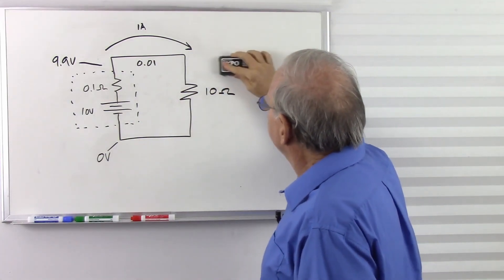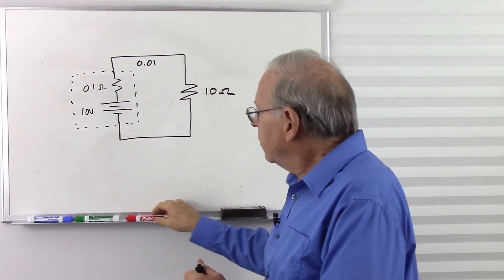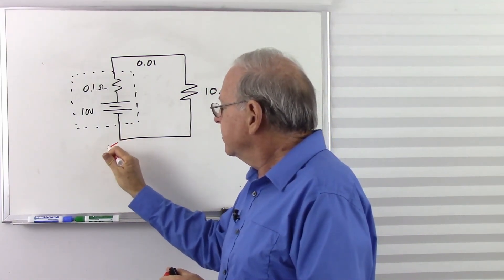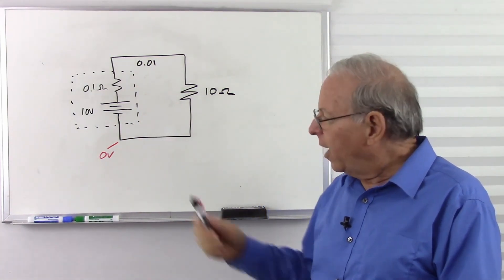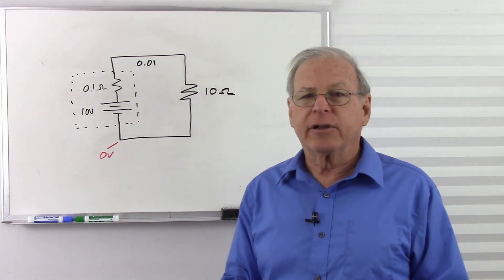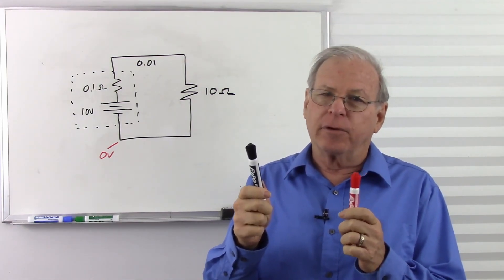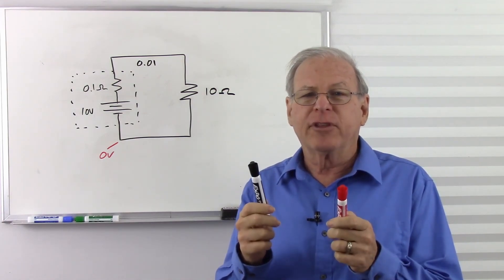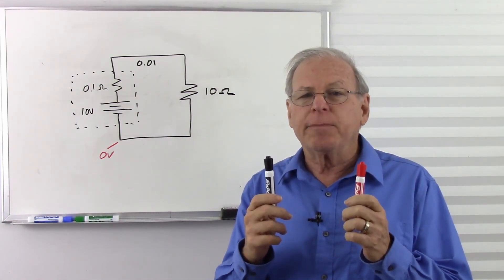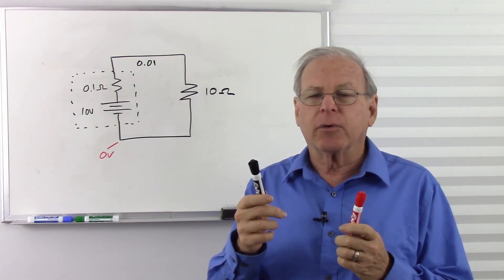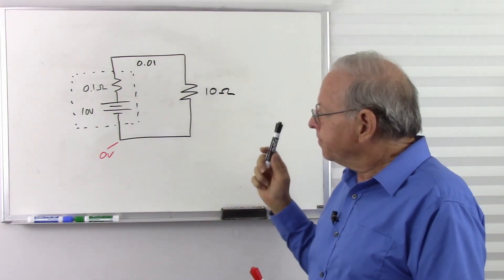Now let's look at the other question: when we get down here we have zero volts. How can we have current flow with no voltage? Remember what a voltmeter tells us — we have a red lead and a black lead. I avoid calling them positive and negative, because if you put the black lead to a higher voltage and the red lead to a lower voltage, you get a negative reading. Normally we put the red lead to the higher voltage and the black lead to the lower voltage, and we get a positive reading; swap them, we get a negative reading.